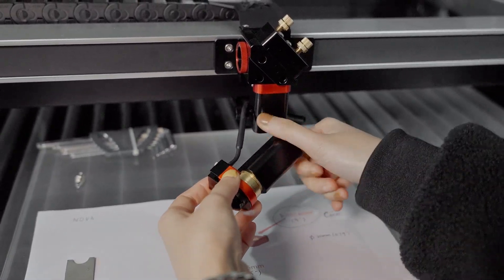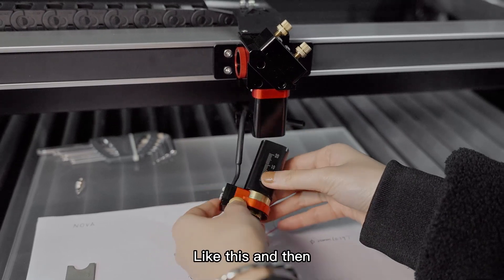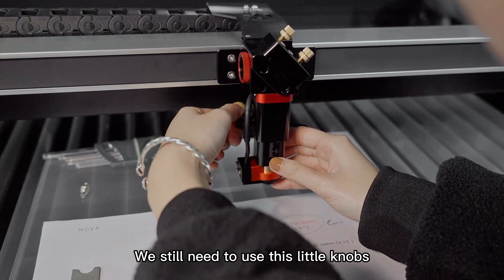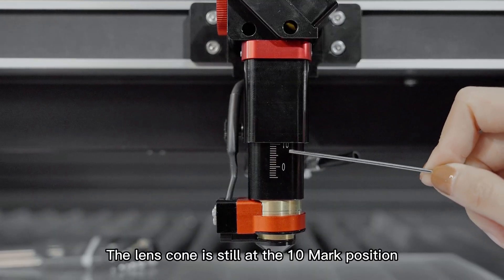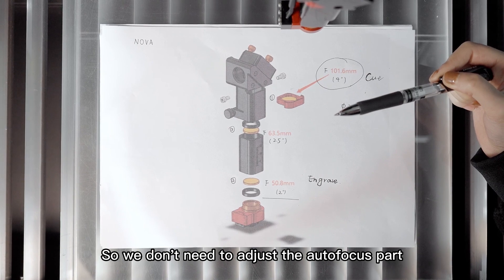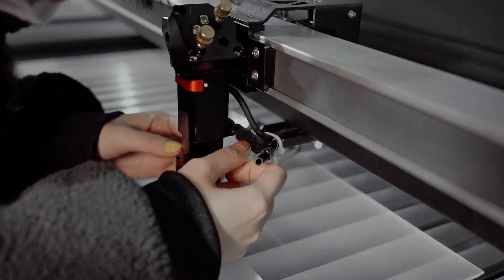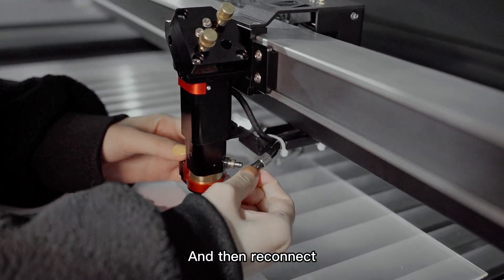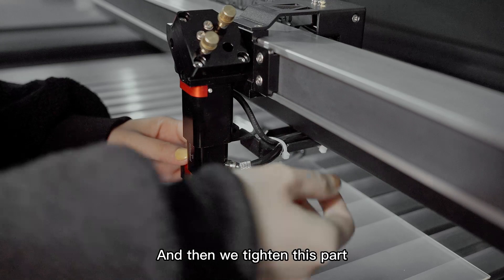We need to connect these two parts first, like this. And then we still need to use the slow knobs. We need to tighten it and make sure the lens cone is still at the 10 mark position. Like we said before, different focus lens has different position, so we don't need to adjust the autofocus part. Remember this one? We need to put it back on. Tighten it, and then reconnect the vent holes. And then we tighten this part.